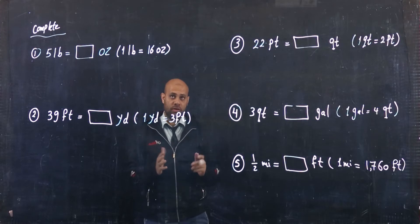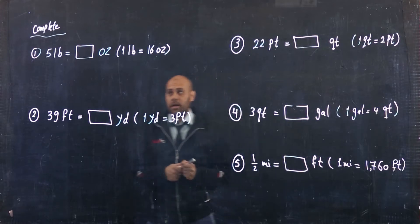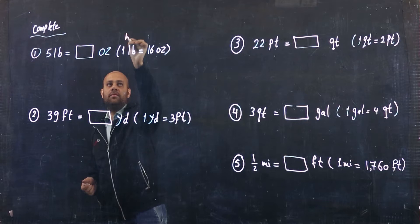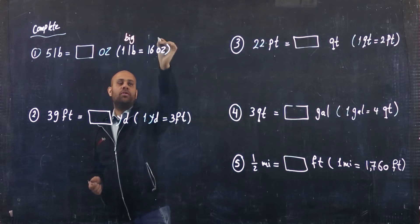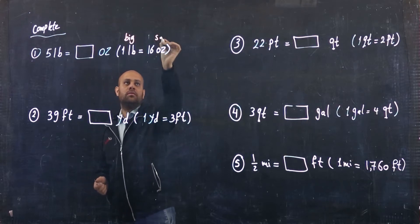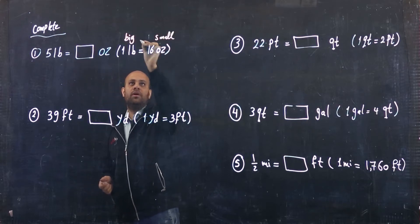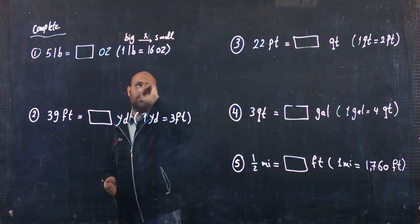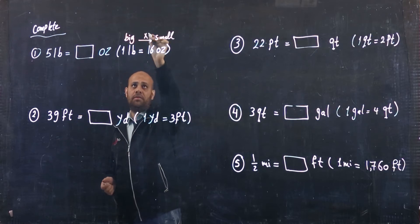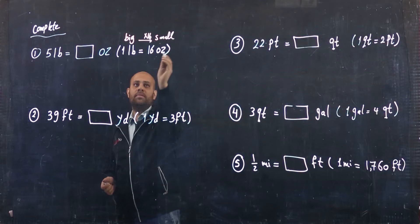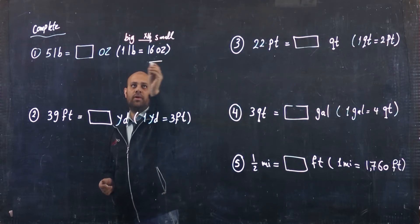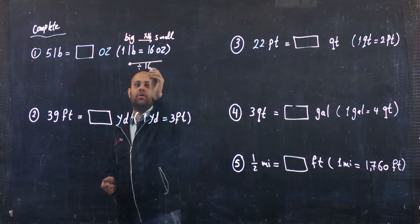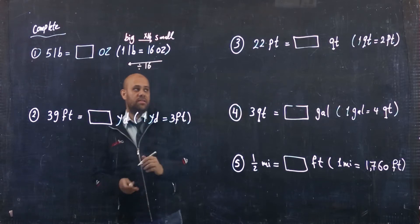If you convert from a big unit to a small unit, you will multiply — multiply by 16 here, for example. And from a small unit to a big unit, you will divide — divide by 16 here.